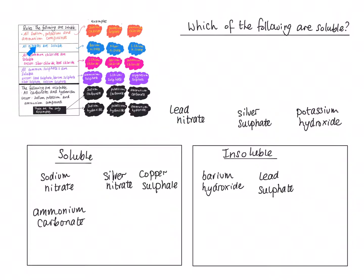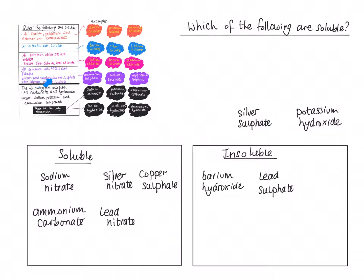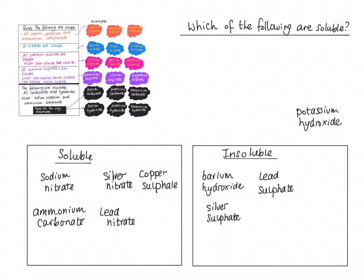Lead nitrate: all nitrates are soluble, there are no exceptions to the rule, so because it ends in the word nitrate, lead nitrate is soluble. Silver sulfate: all common sulfates are soluble, except lead sulfate, barium sulfate, silver sulfate, and calcium sulfate. Silver sulfate appears on the exceptions list, so silver sulfate is insoluble.